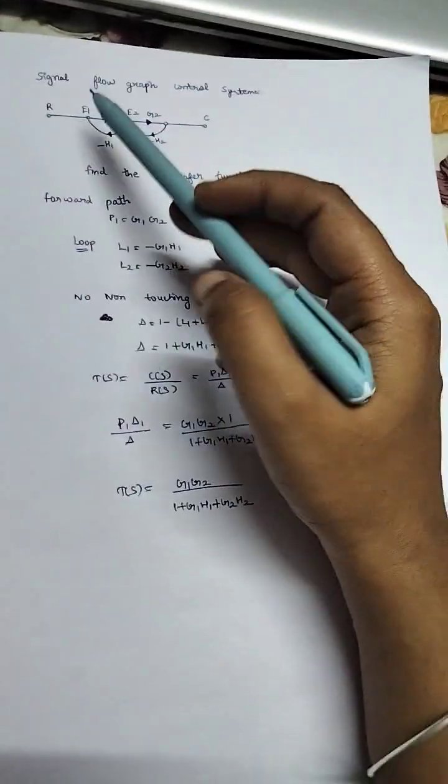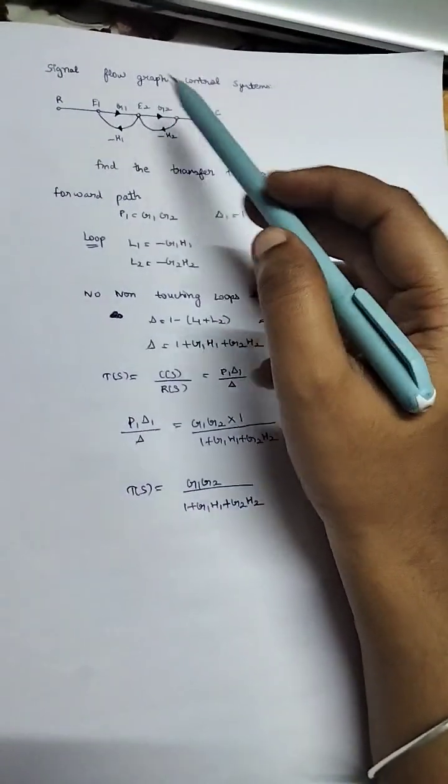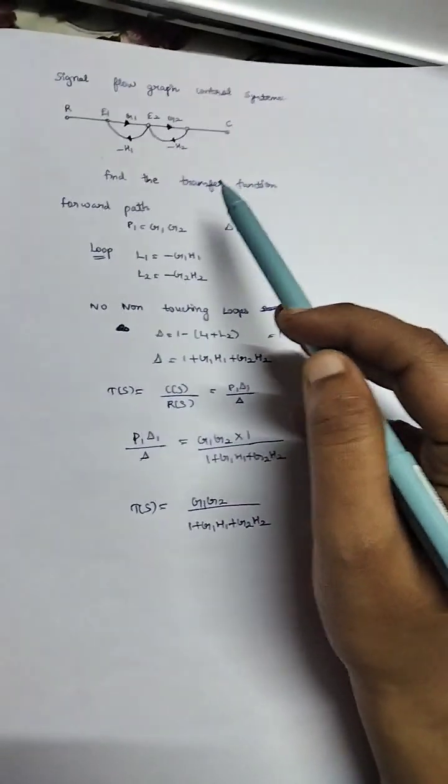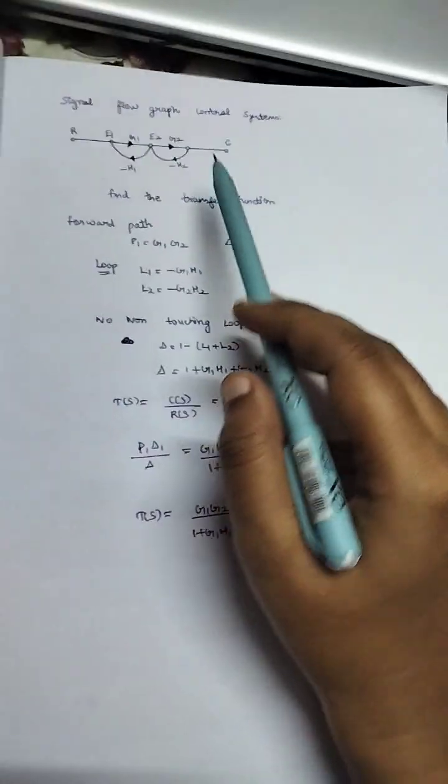Hello people, this is Darsha. Now we are going to see a signal flow graph control system problem. This is a given question to find the transfer function. Step one: you should find how many forward paths are there.